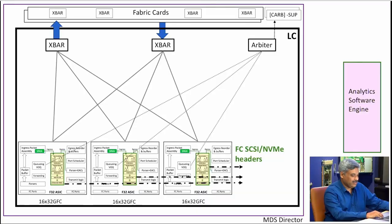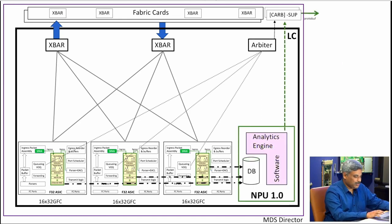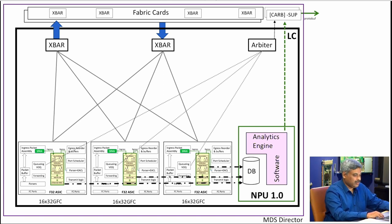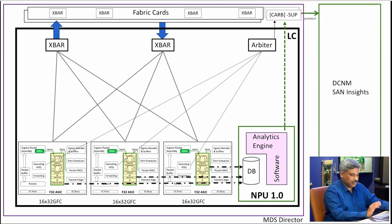In the Fiber Channel 32 Gig ASIC, we moved the tap inside the ASIC and moved the analytics engine on-board. There is a process running on our line card that correlates all the packets, computes the metrics, and provides information directly on the CLI — you do not need any external appliance. If you want to send data to an external appliance, we provide that option as well through the SUP via an Ethernet port. DCNM and Insights provide nice visualizations of that data.